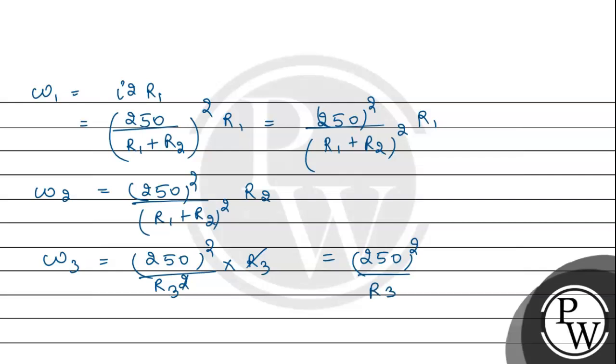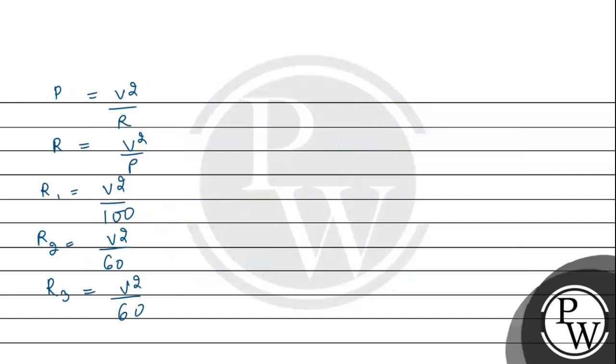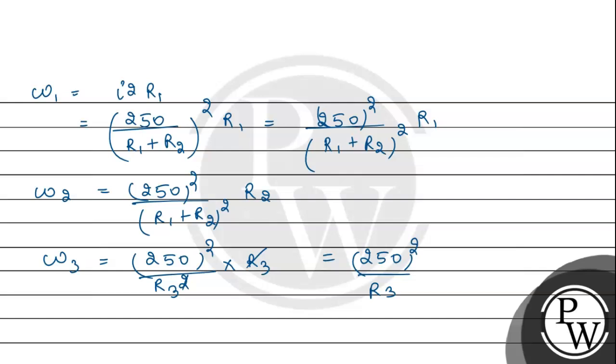250 squared is common. Now here we have R1 value. If we see R1 value compared to R2 and R3, we can say R2 equals R3, and R2 and R3 are bigger than R1. So R1 value is small.